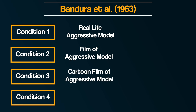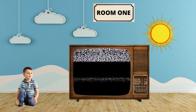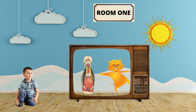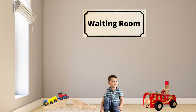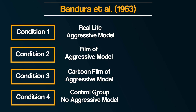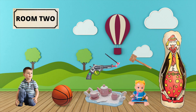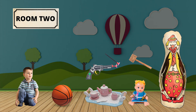Condition 3 was a cartoon film of aggression — the same setup as Conditions 1 and 2, except the film was a cartoon of a cat who carried out the same aggressive behaviors as the human models did. For Conditions 1, 2, and 3, the children then went to the waiting room like the original study, where they experienced mild aggression arousal before being taken to the second room. Condition 4 was a control group — no exposure to aggressive models; they went immediately to the second room. Their behavior was observed via the one-way mirror for 20 minutes.